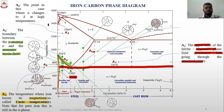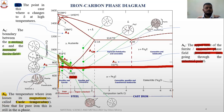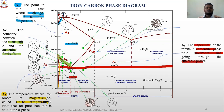Now the fourth one is A4. A4 is the point at which alpha changes to delta at a high temperature. As we see, there is an alpha iron, and as we go upward as the temperature increases, it changes from alpha to delta. This is your A4 region - basically the region at which alpha changes to delta at a very high temperature.